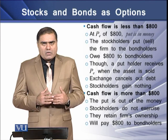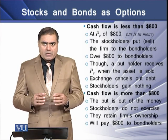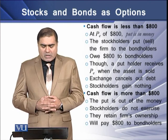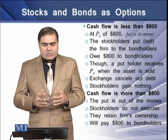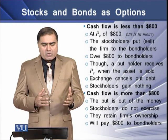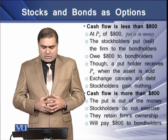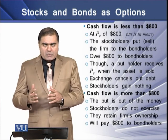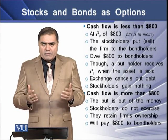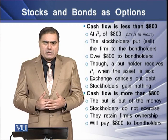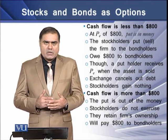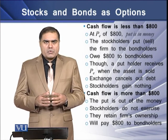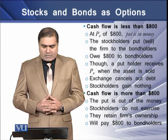On the other side, if the cash flows of the firm are over $800, then this put is out of the money. Stockholders will not exercise their options. They will retain the firm's ownership and will easily pay out the debt, including principal and interest of $800, to the debt holders of the firm.